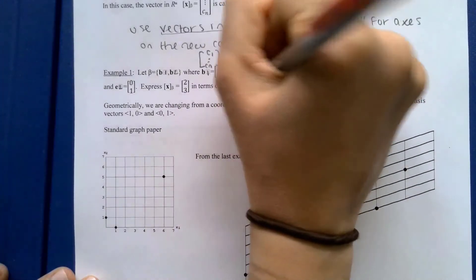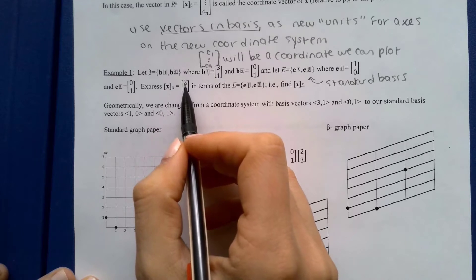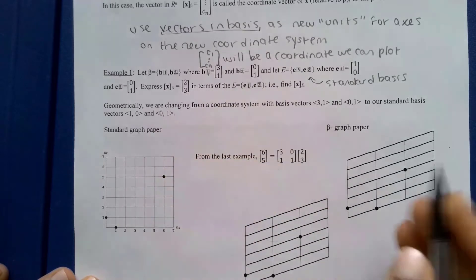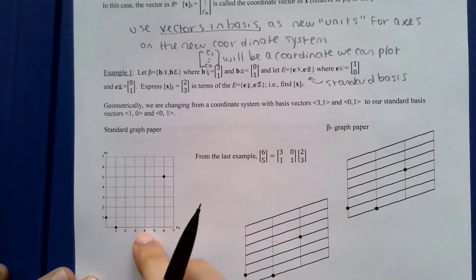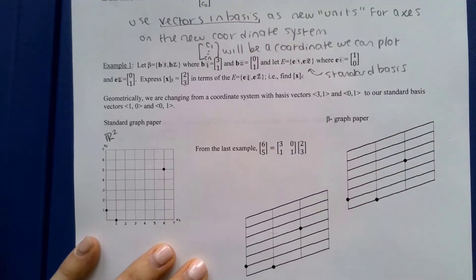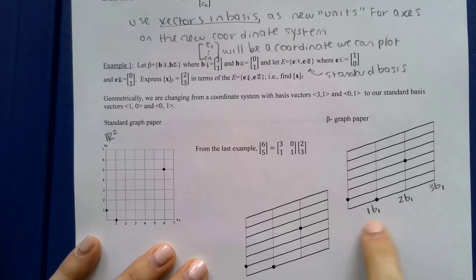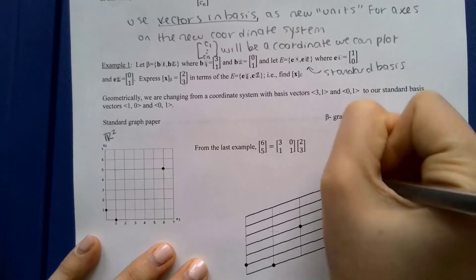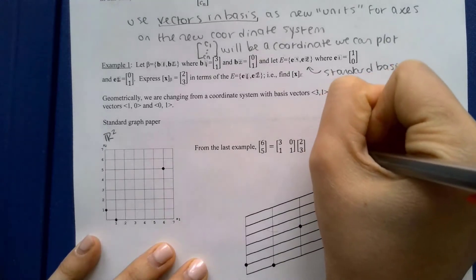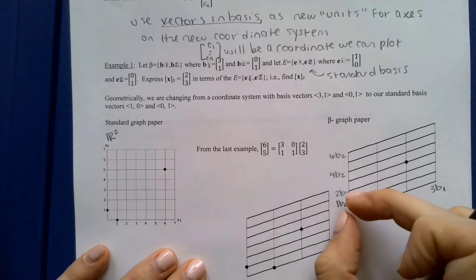For our example: basis vectors b1 = (3,1) and b2 = (0,1), and the standard basis e1 = (1,0), e2 = (0,1). Think of two pieces of graph paper — standard graph paper on one side and 'B-graph paper' on the other, where each unit is one basis vector. So one unit in the b1 direction means one copy of (3,1), and one unit in the b2 direction means one copy of (0,1).